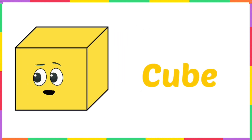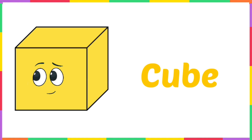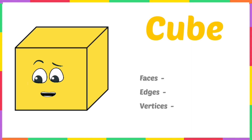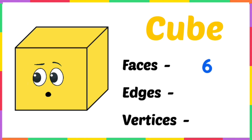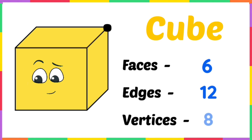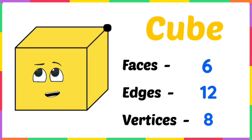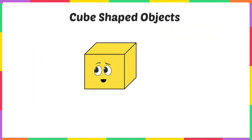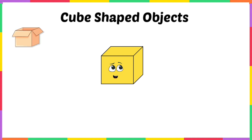Hi, I am a cube! All my sides are square and equal. I am made up of six faces. This is my edge — I have 12 such edges. This is my vertex — I have eight such vertices.